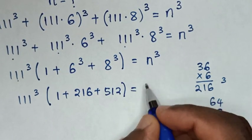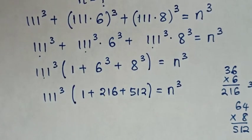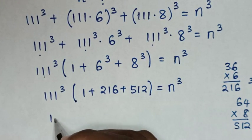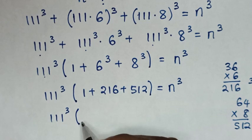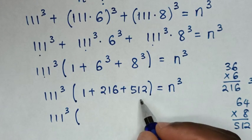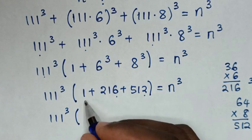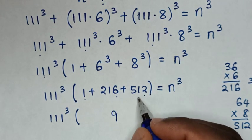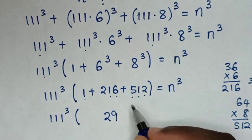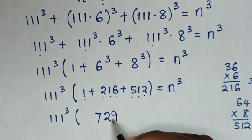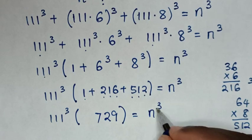So the bracket becomes 1 plus 216 plus 512, which equals 729, is equal to n power of 3.